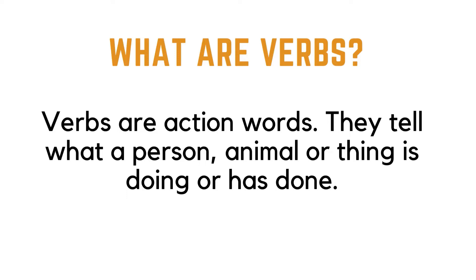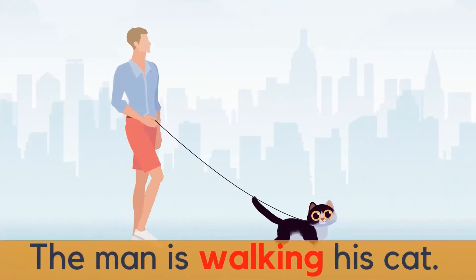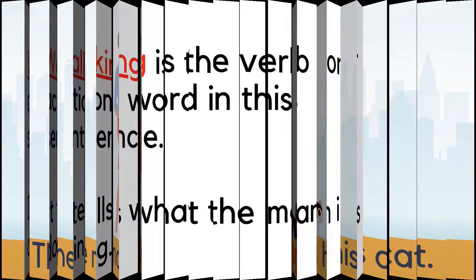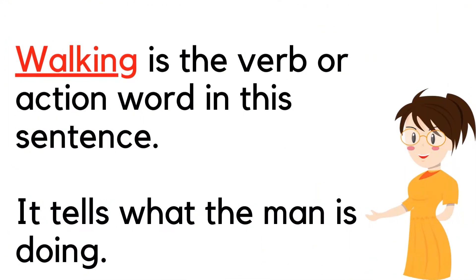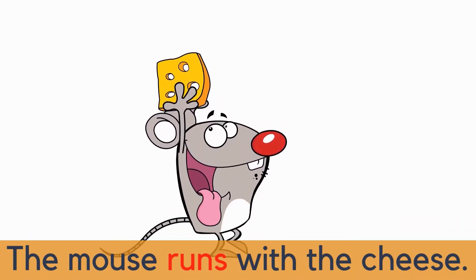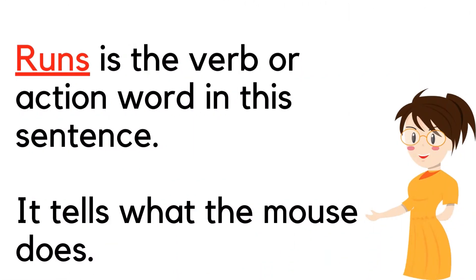Let's look at a few examples. The man is walking his cat. Walking is the verb or action word in this sentence — it tells what the man is doing. The mouse runs with the cheese. Runs is the verb or action word in this sentence — it tells what the mouse does.